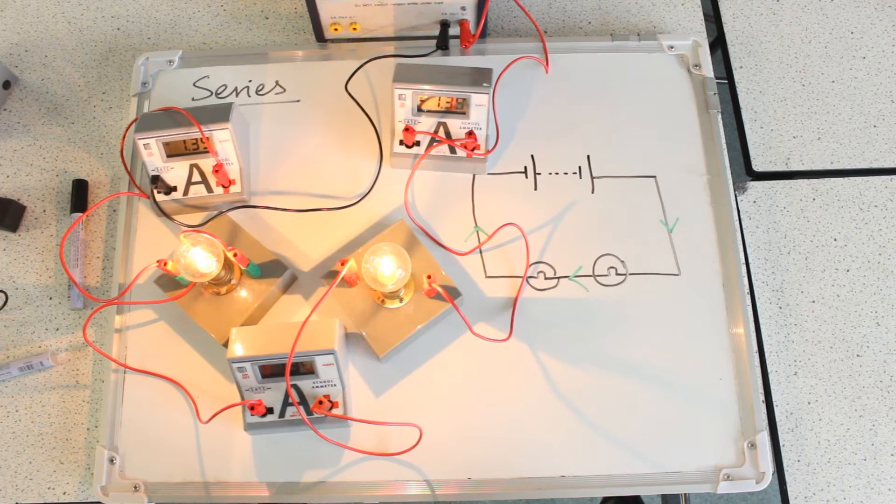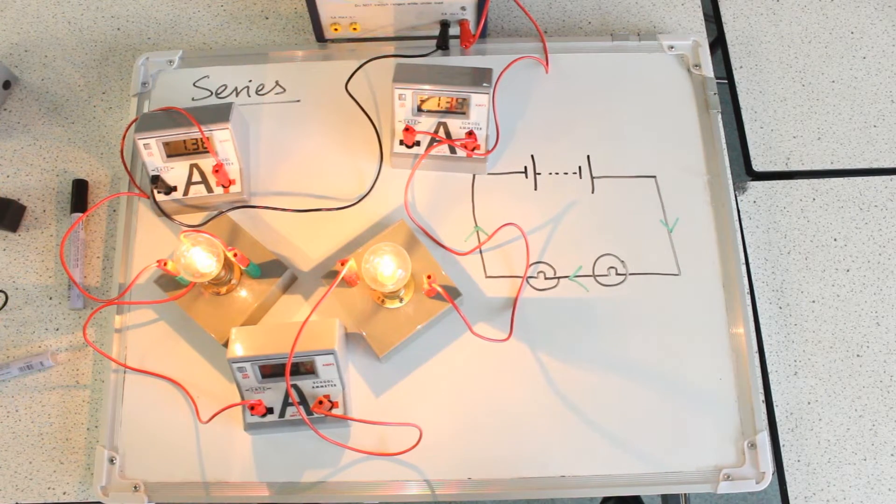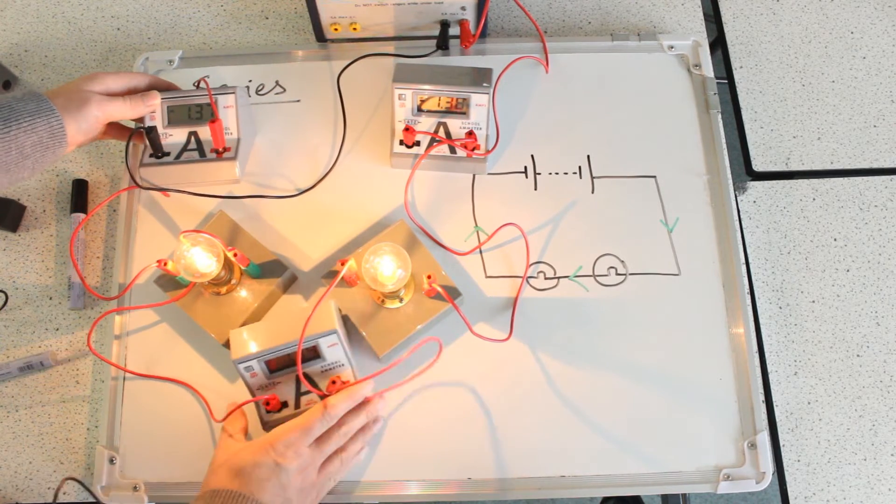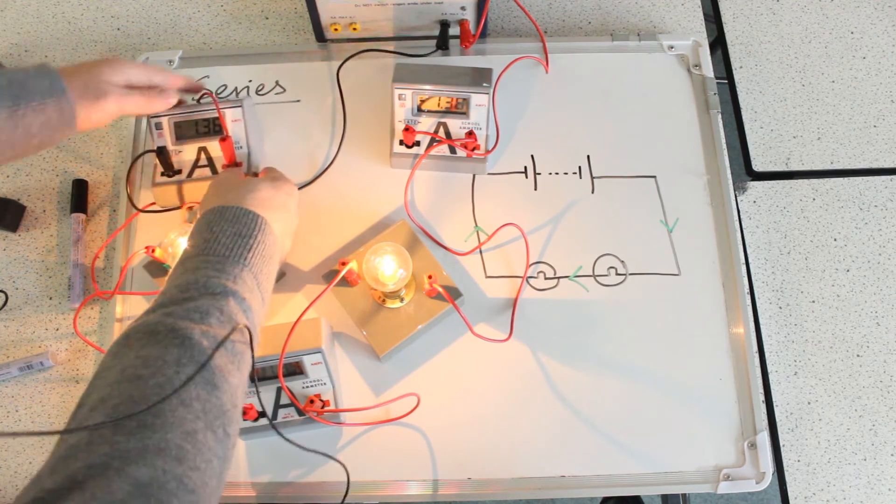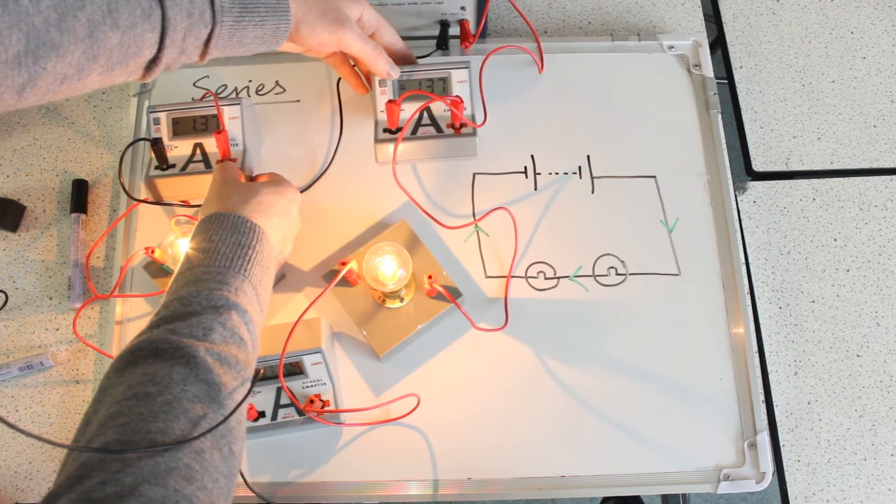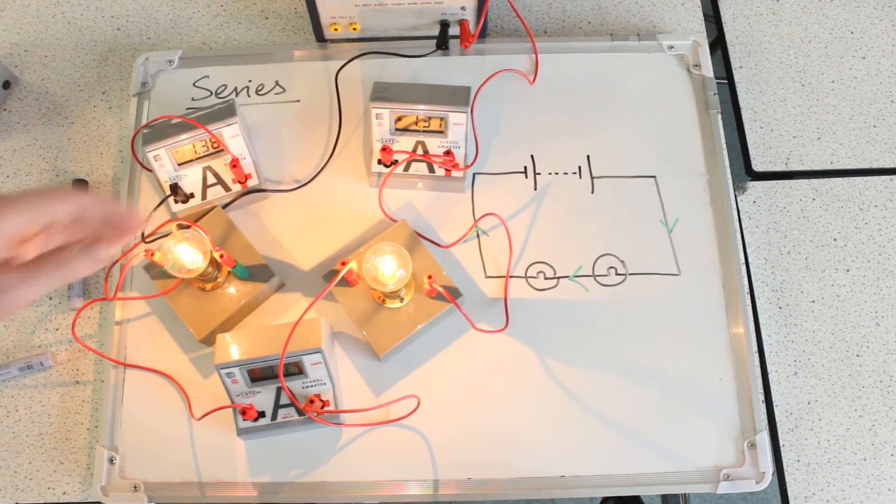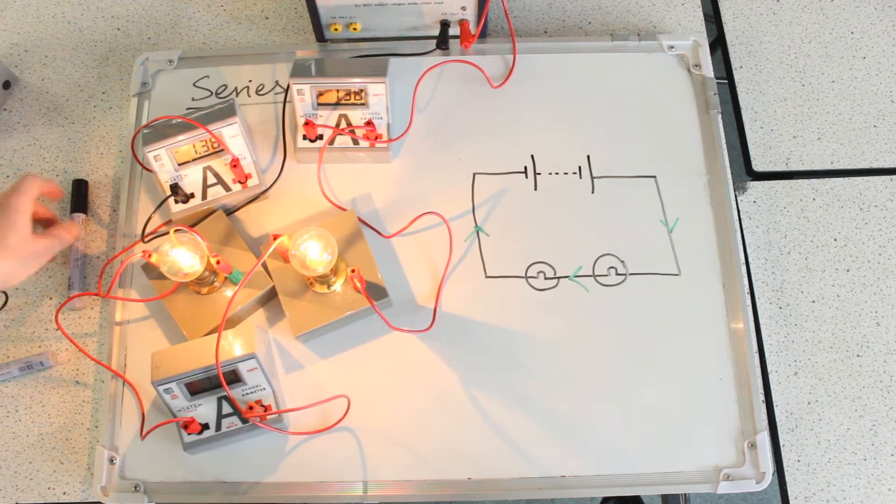So you can see they haven't interfered with the circuit, the bulbs are no less bright. And if I just tilt them up to the camera, I hope you can maybe read them, they're all pretty much equal.